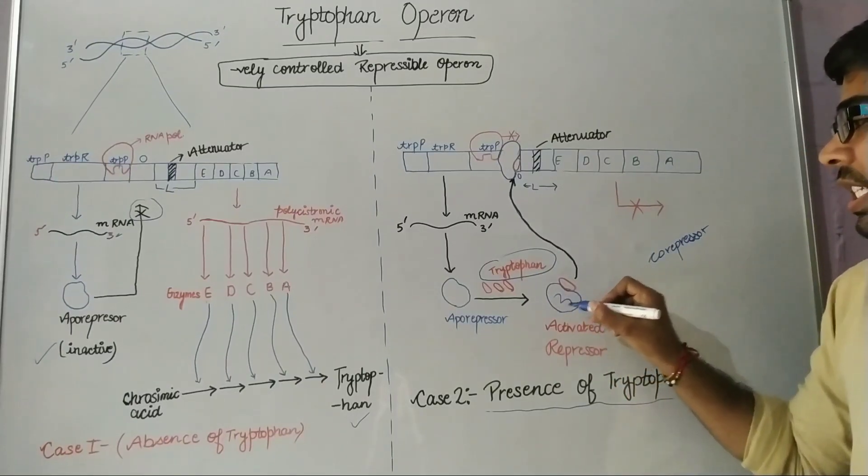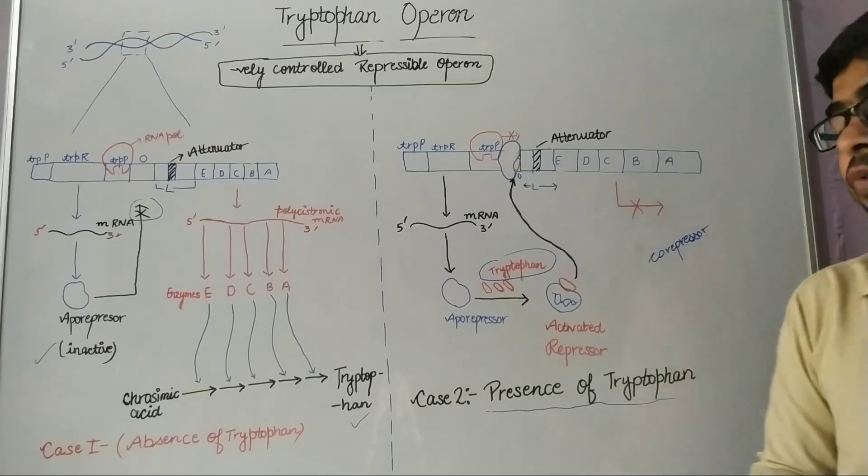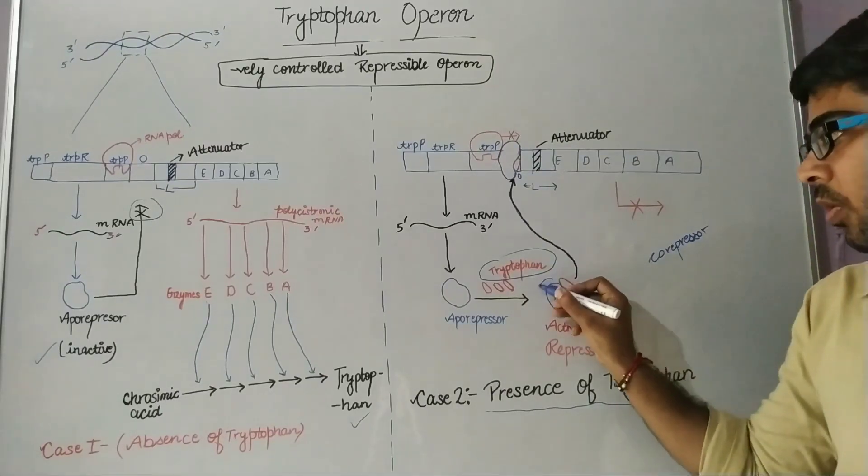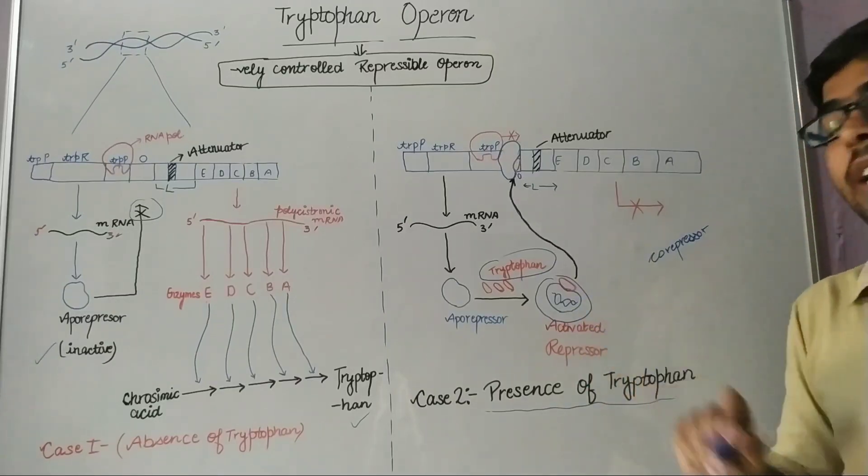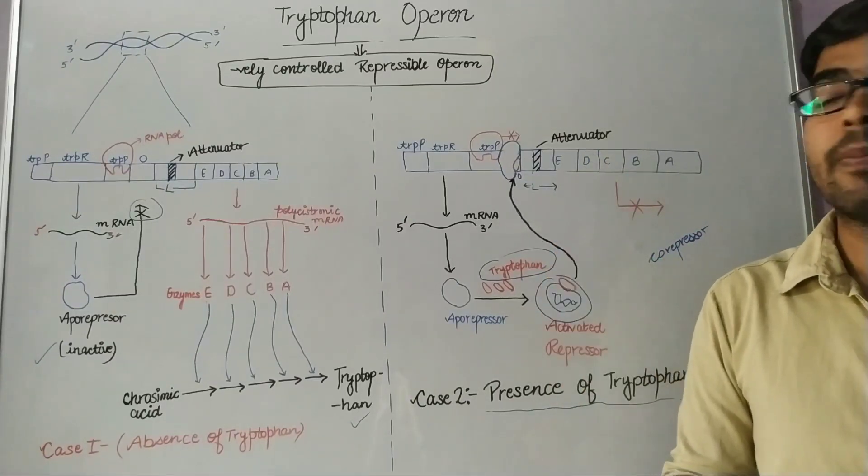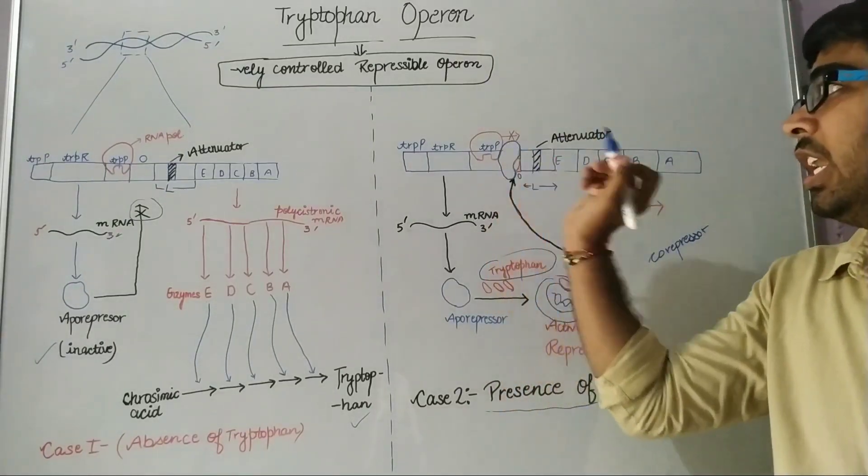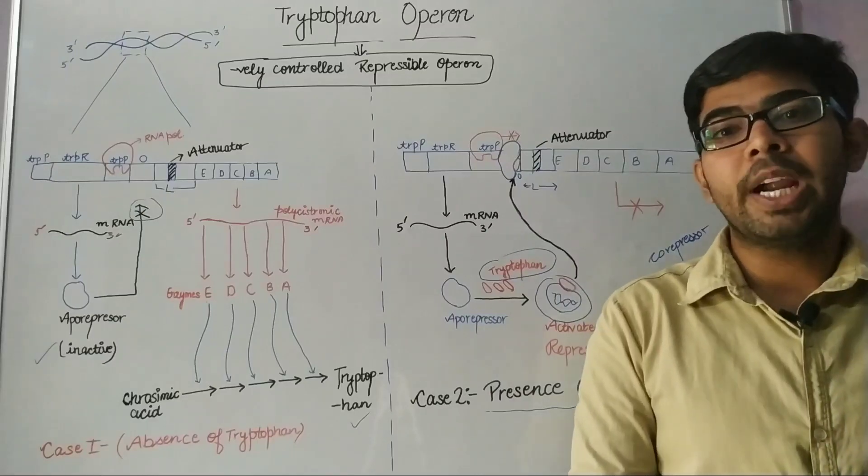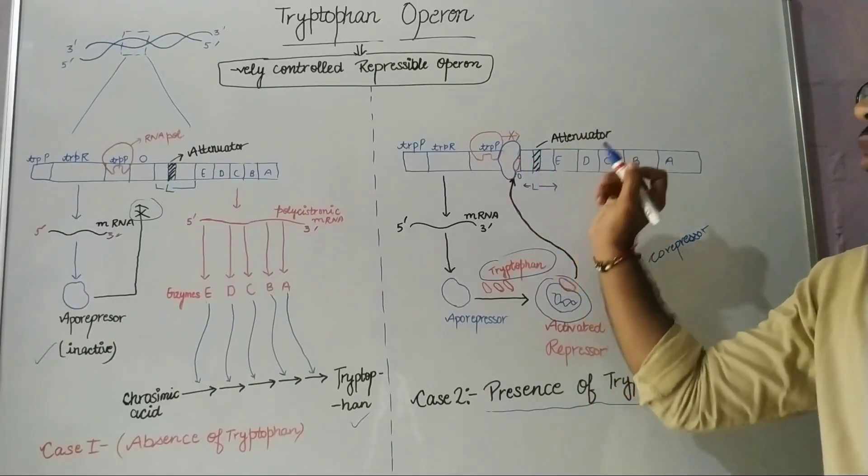The corepressor binds to the aporepressor protein and leads to conformational changes in the aporepressor protein, which will activate it. Now, this activated repressor will bind to the operator region.